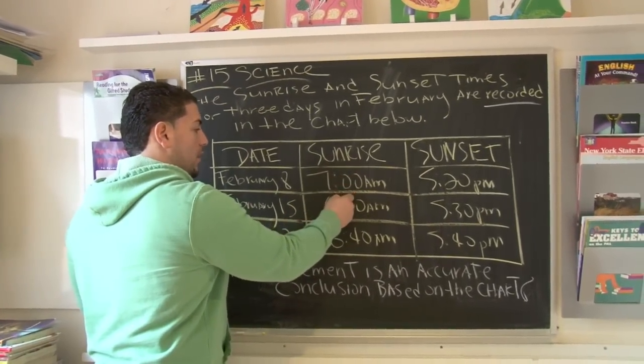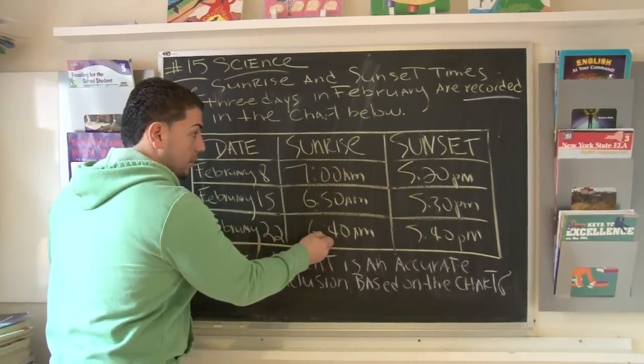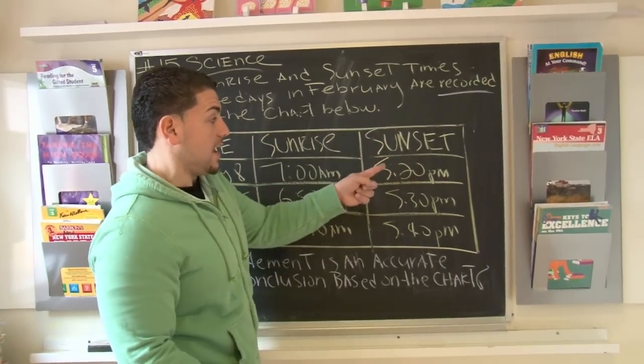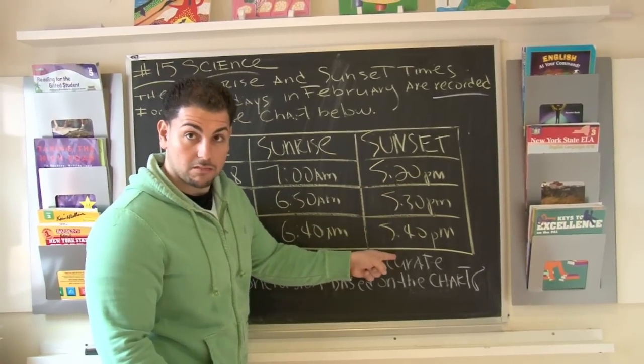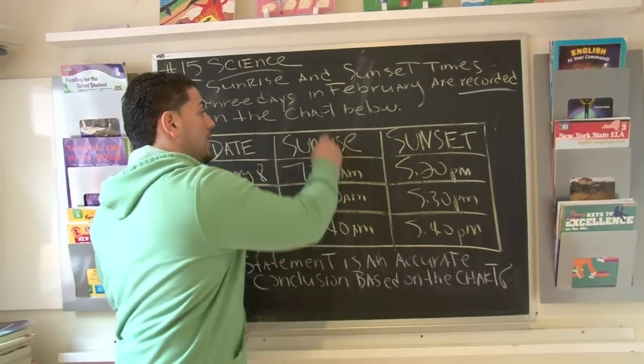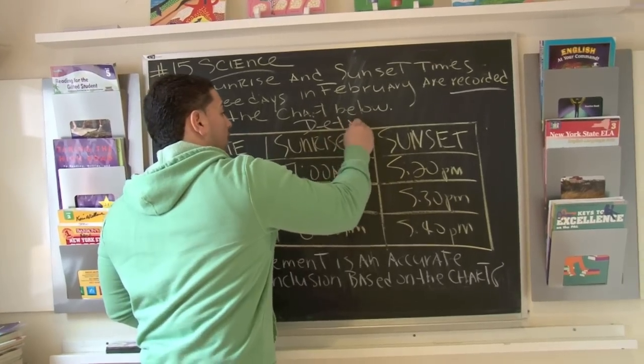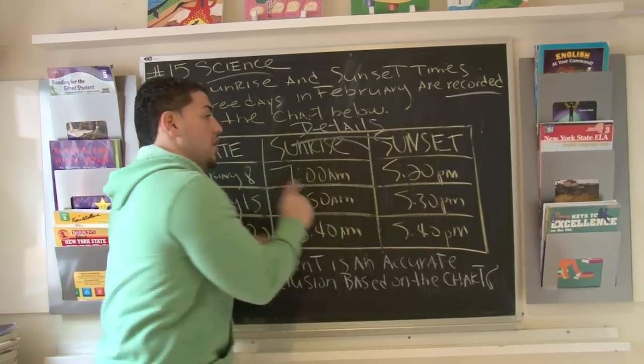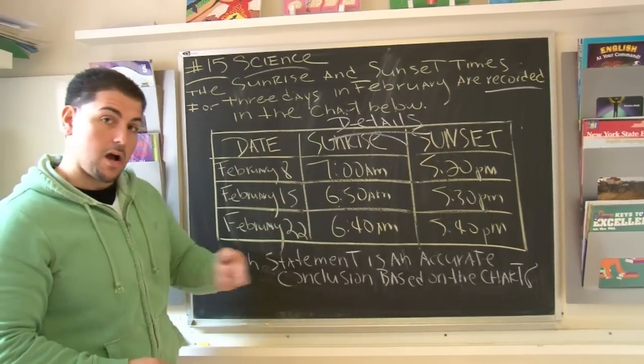We see the sunrise is going what? Becoming more earlier. And then we're seeing the sunset is getting a lot what? Later. So those are details. Whenever we do charts, we look for details. No keywords, details. So stay tuned, we're going to be right back.